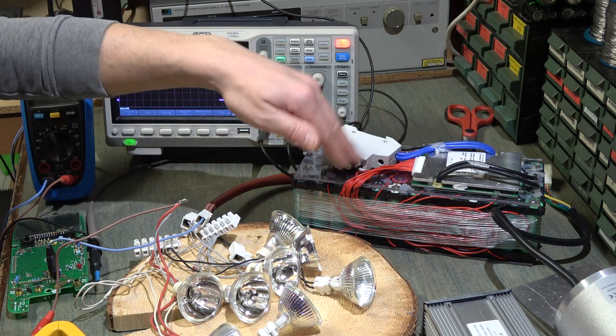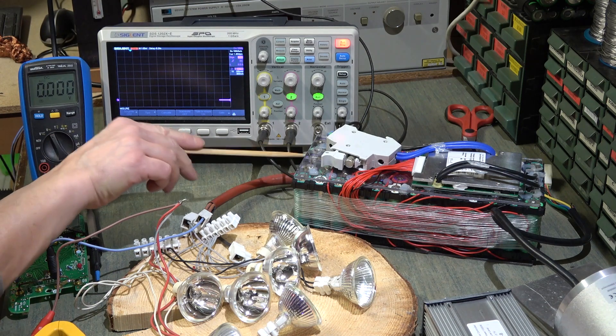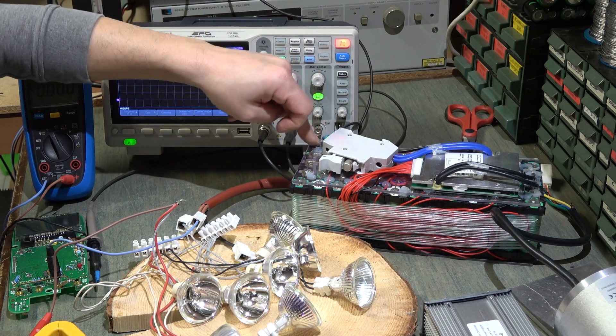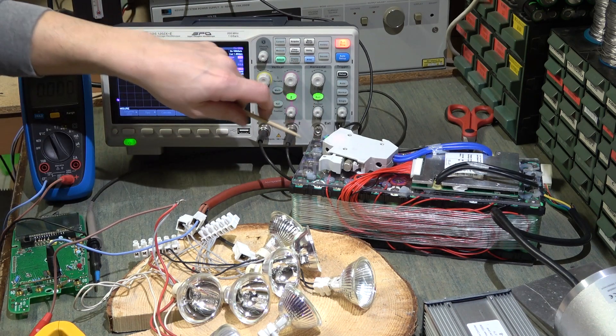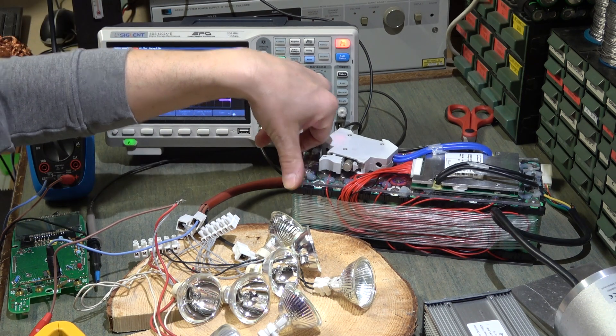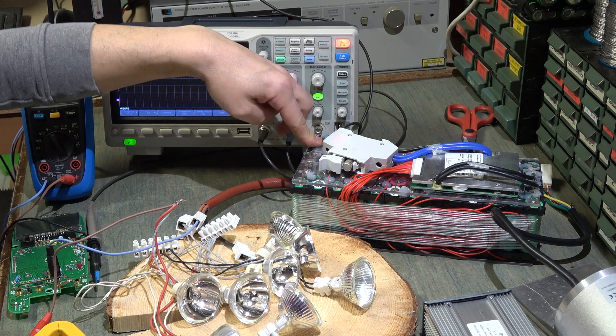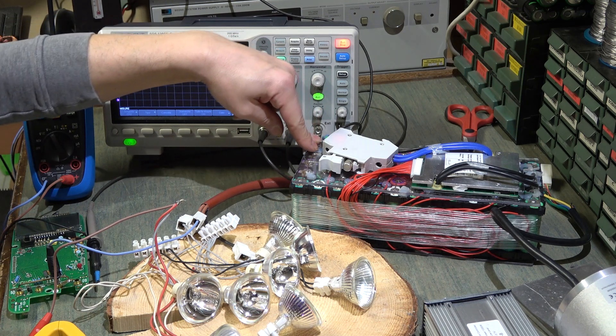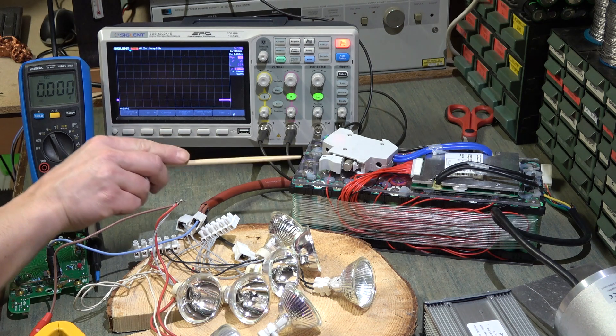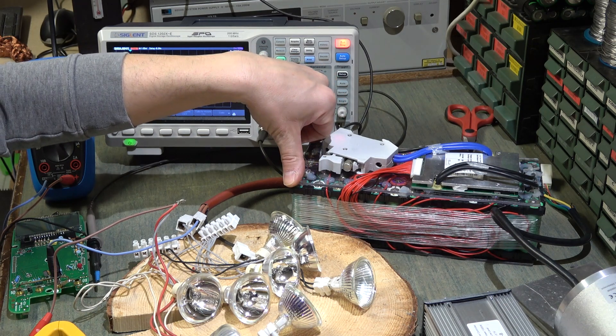Quindi a vuoto abbiamo qui 54 volt e con cinque file avremo per due, perché ogni cella io la calcolo sempre da due per ora. Avremo 54 volt 10 ampere per un'ora, però queste celle riescono anche singolarmente a fornire continui 4 ampere. Quindi gli ampere diventano 20 ampere.